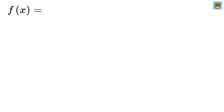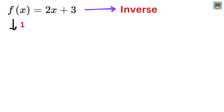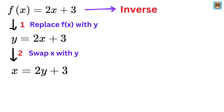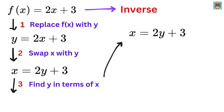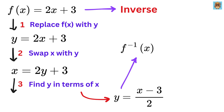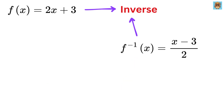Say we have f of x equals 2x plus 3, and we have to find the inverse of this function. As a first step, replace f of x with y, so y equals 2x plus 3. Next, we switch x with y and y with x, giving us x equals 2y plus 3. Now we find y in terms of x: take 3 to the left-hand side to make it minus 3, then divide both sides by 2 to get y equals x minus 3 over 2. This y is the inverse of f of x equals 2x plus 3.